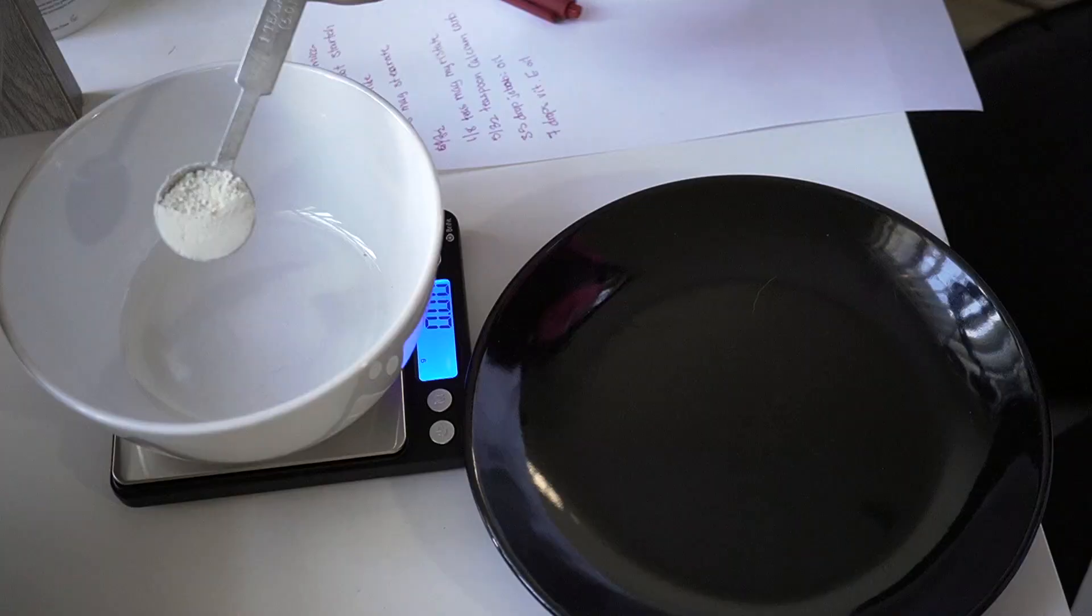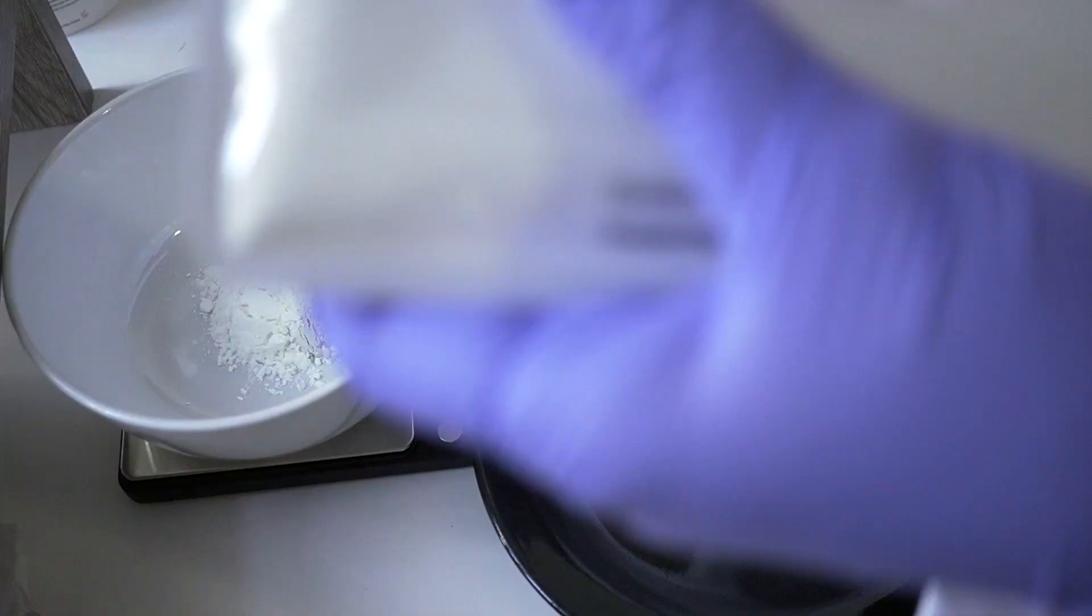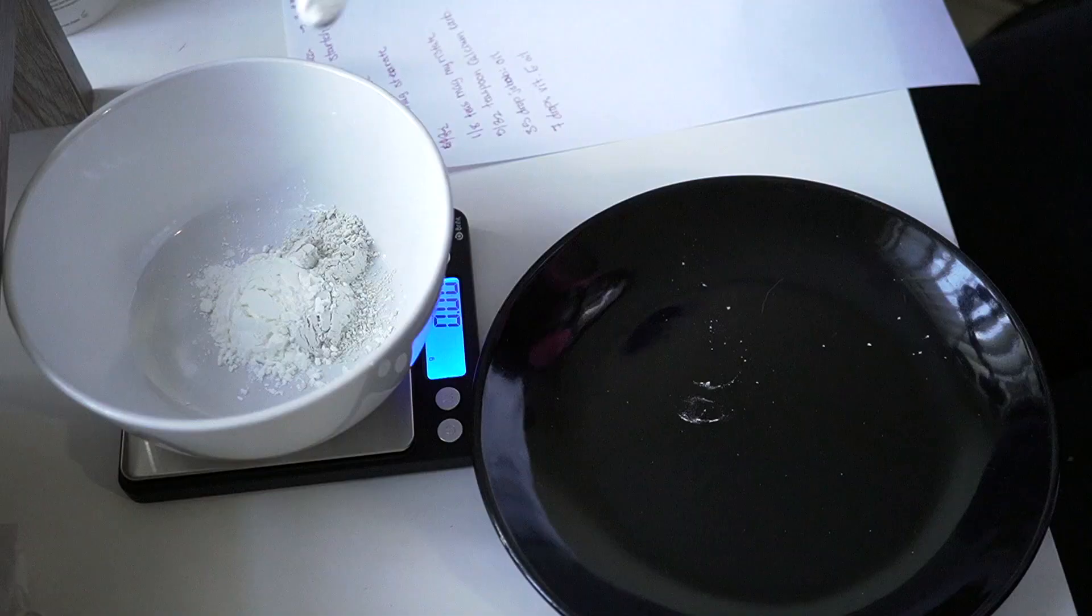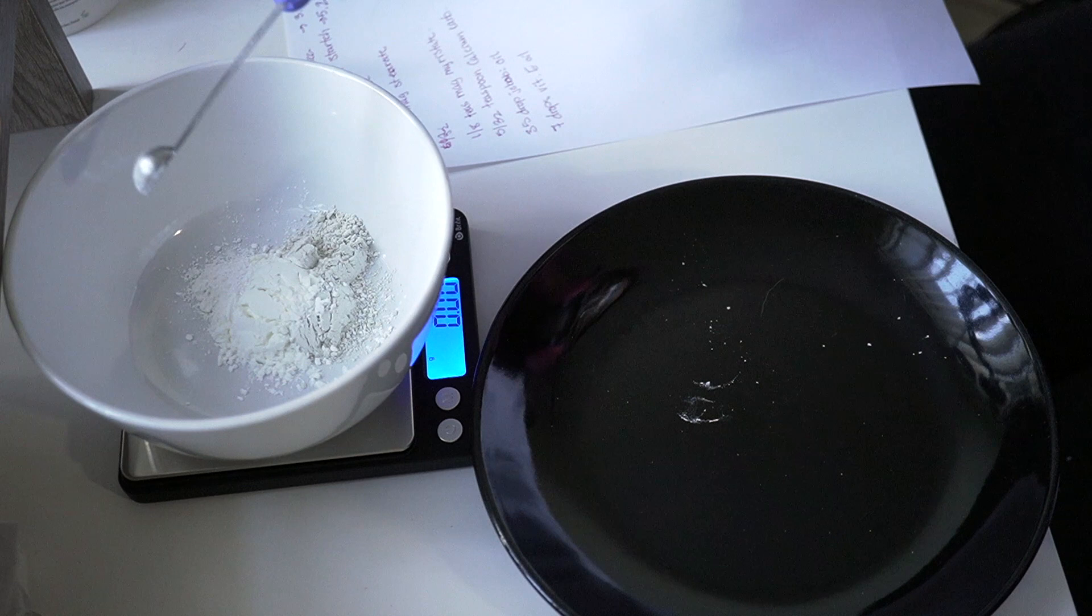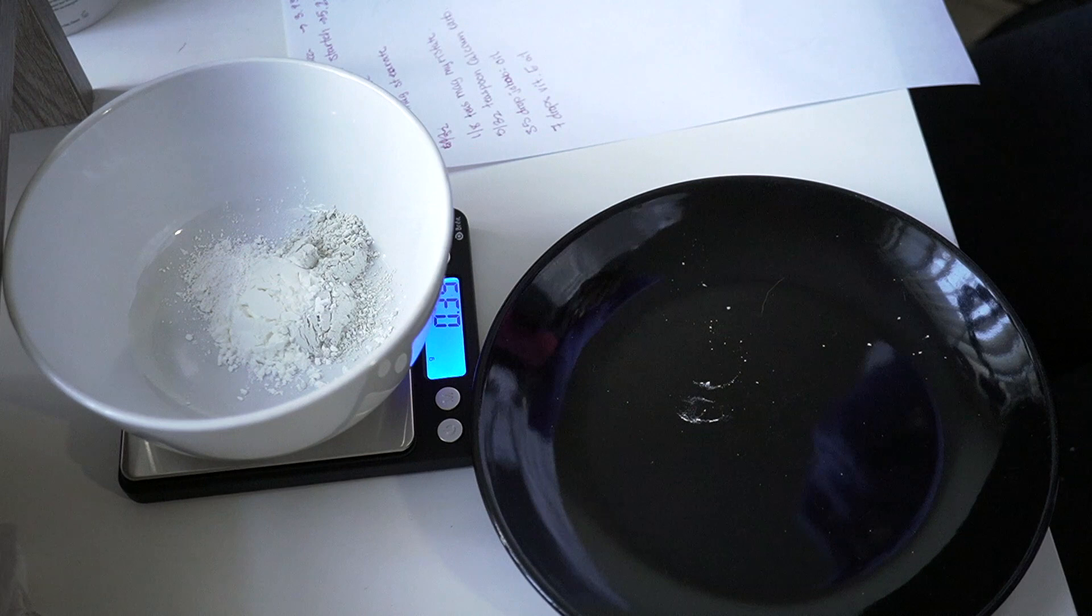So to start the formula off we start with two teaspoons of Sericite Mica which helps with diffusing the light properties in the eyeshadow as well as giving oil control and then comes in the cornstarch because I didn't have any arrowroot starch so we did two teaspoons of that. Nobody wants crusty looking eyeshadow or eyeshadow that disappears at the end of the day.